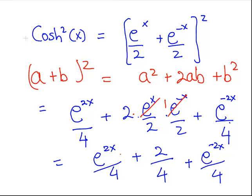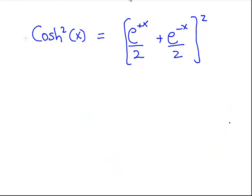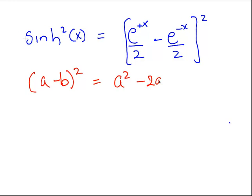Now, the next one is sinh squared of x, and that is e to the x over 2 minus e to the minus x over 2, squared. And again, this is in the form a minus b squared is equal to a squared minus 2ab plus b squared.